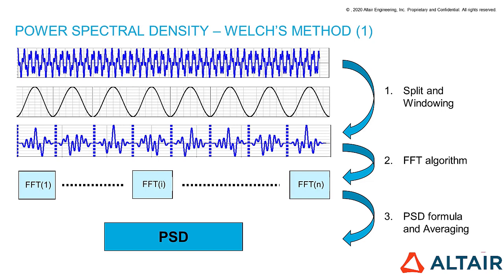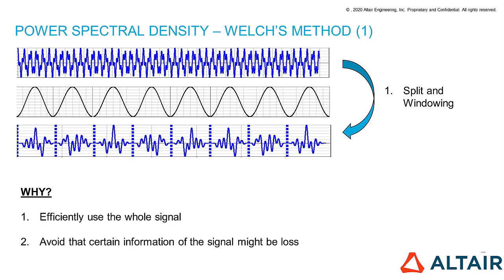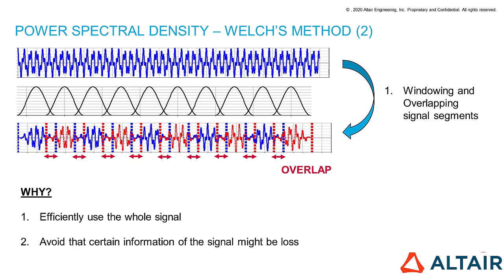But this is not yet the Welch method. To get it, we need to slightly modify the first step. When we are applying a window function to a signal, we are modifying it. And what happens is that we are kind of neglecting the first and the last part of each segment, where the window coefficients are small. This means that we are not efficiently using our signal and also that we might lose some important information if they occur in these areas. So, to avoid that, what we do is to divide the signal into overlapping segments. Everything else remains the same.